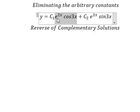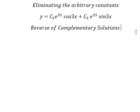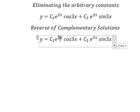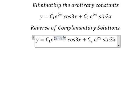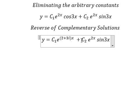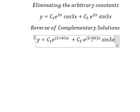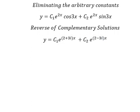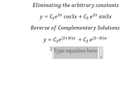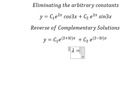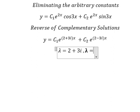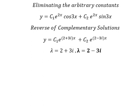We have e to the power of 2s and cosine 3s. That means we have e to the power of 2 plus 3i, and this one we can transform into 2 minus 3i. So that means we have two lambdas here: the first one is lambda equals 2 plus 3i, and lambda equals 2 minus 3i. These are the complex numbers.